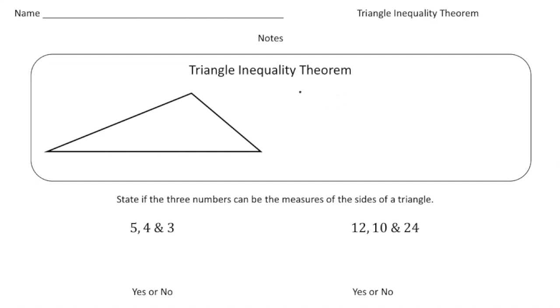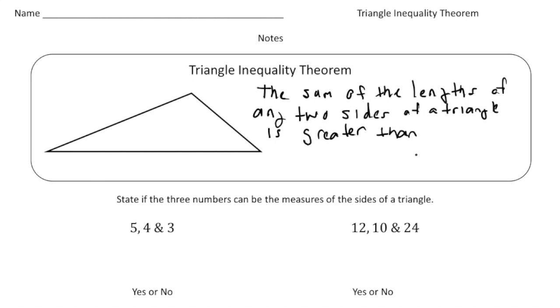So let's write that down, and then I'll explain it more in detail. So again, it's the sum of the lengths of any two sides of a triangle is greater than the length of the third side.